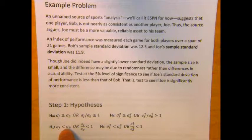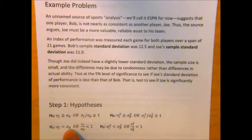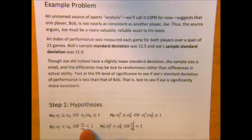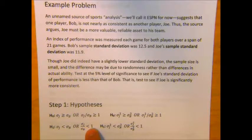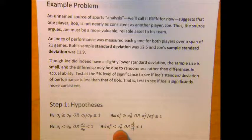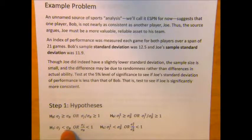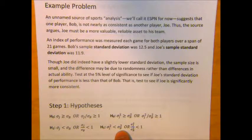In our researcher's hypothesis, we're testing to see if Joe's sigma is less than Bob's sigma. I could rewrite that as a ratio: Is the ratio of Joe's sigma to Bob's sigma less than 1? The hypotheses are the exact same if we use population variances. Saying that Joe's sigma is less than Bob's is the same as saying Joe's variance is less than Bob's variance. They are synonymous statements.